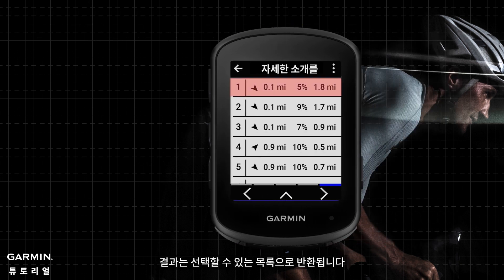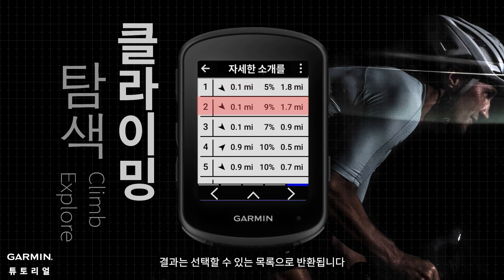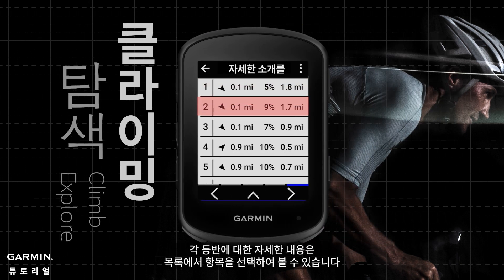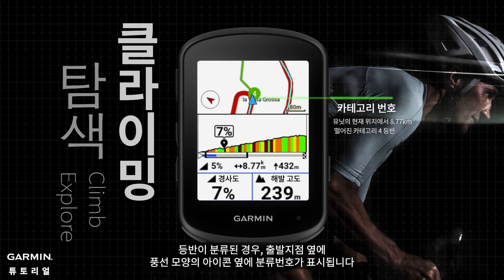The results are returned in a list you can select from. More details about each climb can be viewed by selecting an entry from the list. If the climb is categorized, the category number shows next to the starting point balloon-shaped icon.